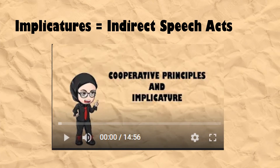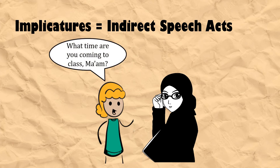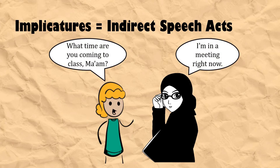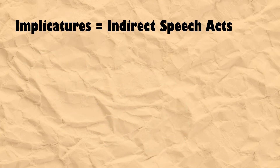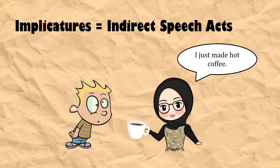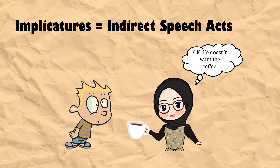Let me give you an illustration. When you ask me what time I'm coming to class and I answer 'I'm in a meeting right now' — do you think I simply inform you that I have a meeting? No. You may interpret my answer as meaning I'm not coming to class, or I will be late to class, because at the time the conversation happens I'm in a meeting. Another example is when I offer you hot coffee. If you reply with 'I just had a cup of hot chocolate,' I'd definitely take your reply as a refusal, not merely as a statement to give information.